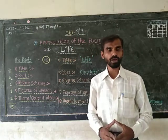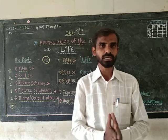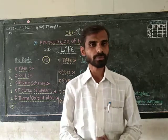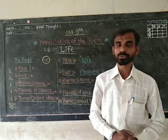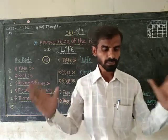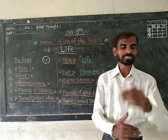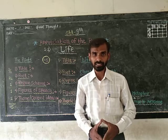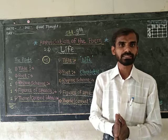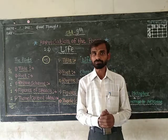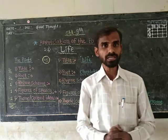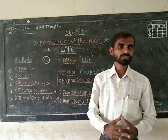On the basis of these 5 points, try to collect the information together and write the appreciation of a poem in paragraph format. The first point — title: the title of the poem is 'Life.' You can put single inverted commas or highlight the title using a pencil. Next, a beautiful poem regarding Life — it is written by Charlotte Bronte.